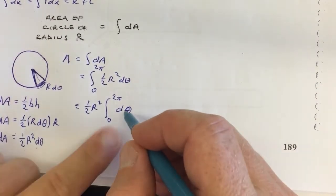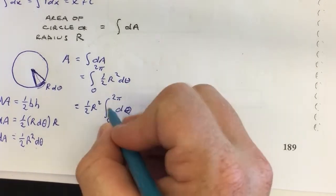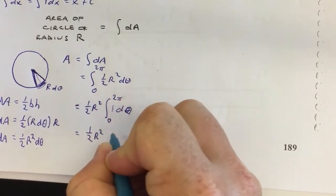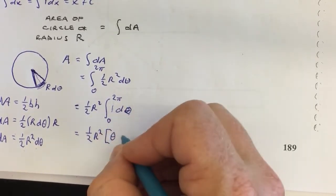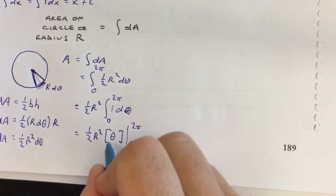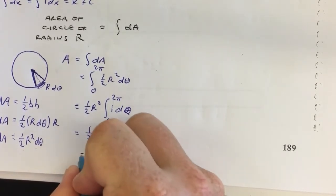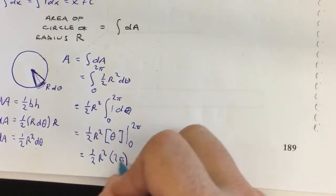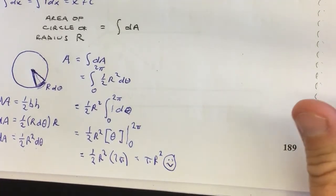Instead of dx you just have dθ, so this integrates to θ — the function whose derivative with respect to θ is 1 is just θ. You get ½r²·θ evaluated from 0 to 2π, which is ½r²·(2π − 0) = 2π/2 · r² = πr². So it worked — that's the area of a circle by carving it up into pizza slices.